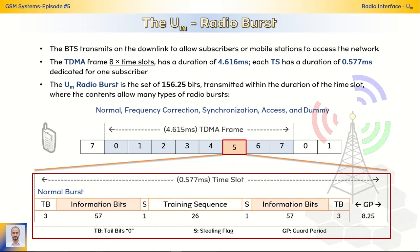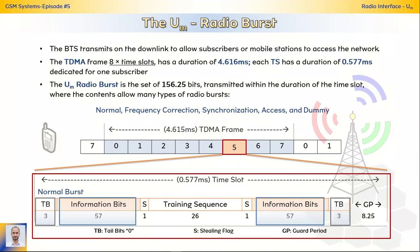For now, the normal burst consists of 3 bits as tail bits at the beginning and at the end of the frame, 57 bits for information bits, 1 bit for a stealing flag, and 26 bits as training sequence. After the tail bits at the end, there are 8.25 bits used for the guard period. Other types of bursts will be discussed in the next episode, inshaaAllah.